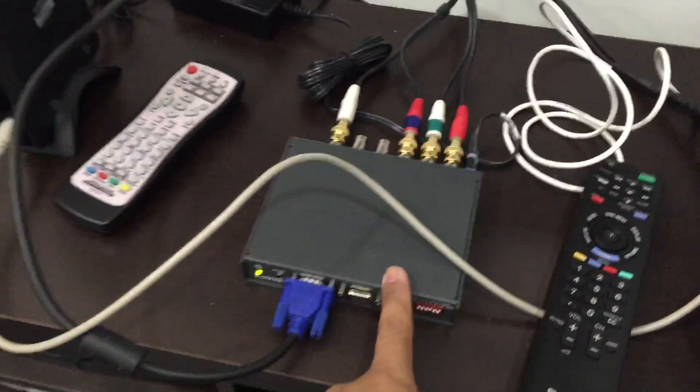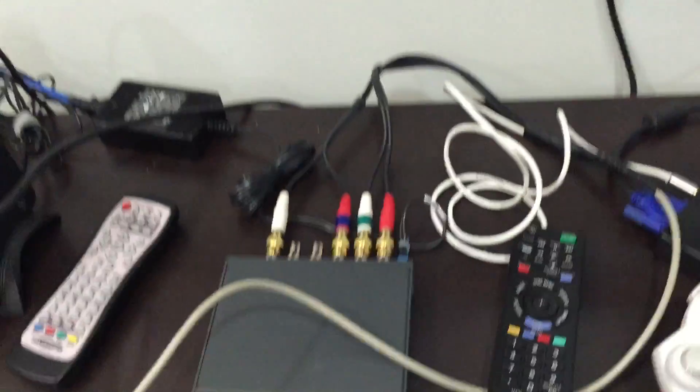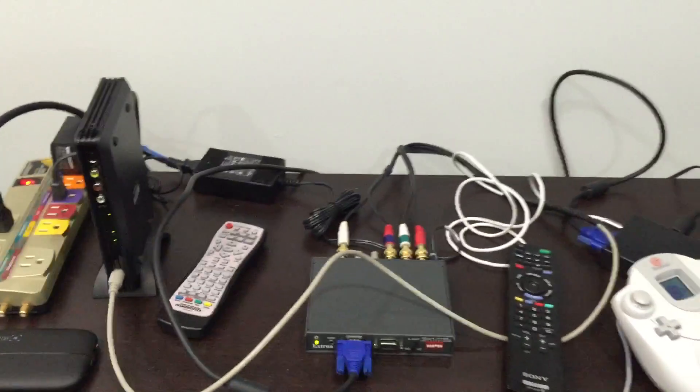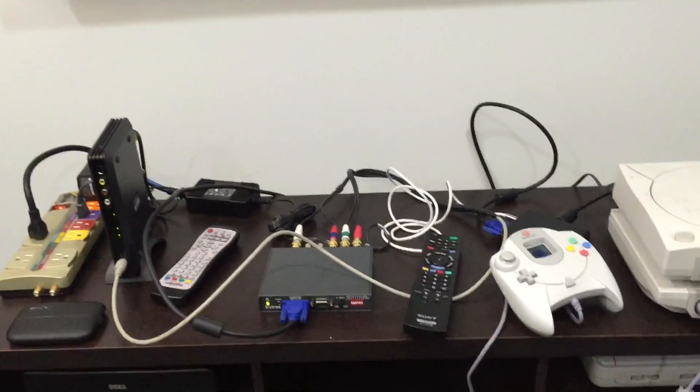The RGB interface was $20 shipped. Cables were about $7 to $8 shipped from Monoprice. So less than $30. We have 480p on the Dreamcast.